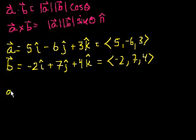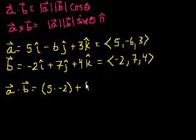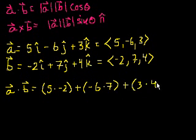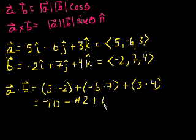So how do I take a dot b? This, I think you'll find fairly pleasant. All you do is you multiply the i components, add that to the j components multiplied, and then add that to the k components multiplied together. So it would be 5 times minus 2, plus minus 6 times 7, plus 3 times 4. So it equals, what is this? Minus 10, minus 42, plus 12. So this is minus 52 plus 12, so it equals minus 40.